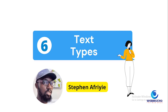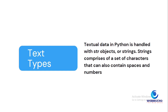In this video, we are talking about text types in Python. So what are the text data types in Python? Text type is also referred to as strings. A string comprises of a set of characters, and these characters can contain spaces and numbers as well. There's also a way you can represent numbers as a string data type. Let's see that in action.